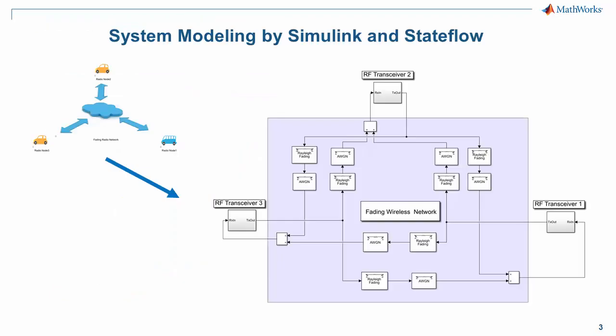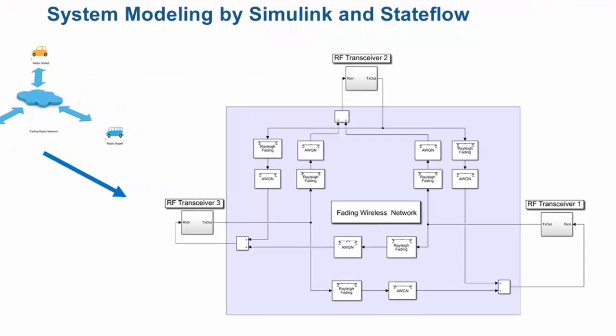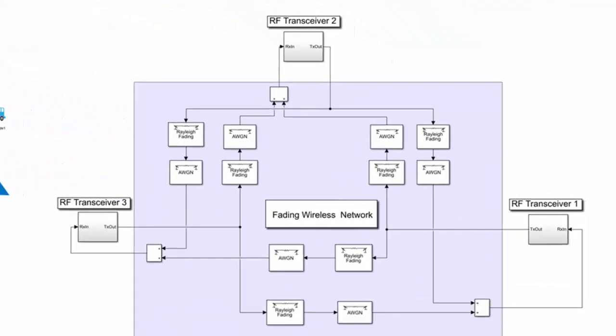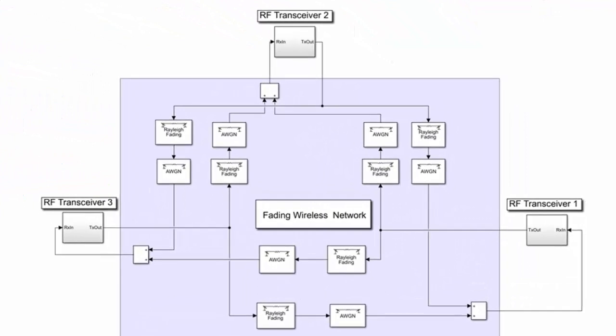This is the top level of the wireless network model. The three transceivers are interconnected by radio fading channels. Each radio node can transmit and receive signals to and from the other nodes. This topology of the network can be extended to a network with a larger number of radios.